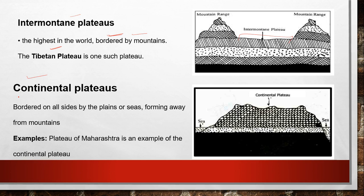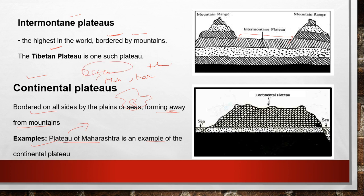The next is the continental plateau, bordered on all sides by plains or seas and forming away from mountains. An example is the Plateau of Maharashtra — this is the Deccan Trap. There are many different plateaus within the Deccan Trap such as the Maharashtra Plateau, Karnataka Plateau, and Telangana Plateau — all are examples of continental plateaus.